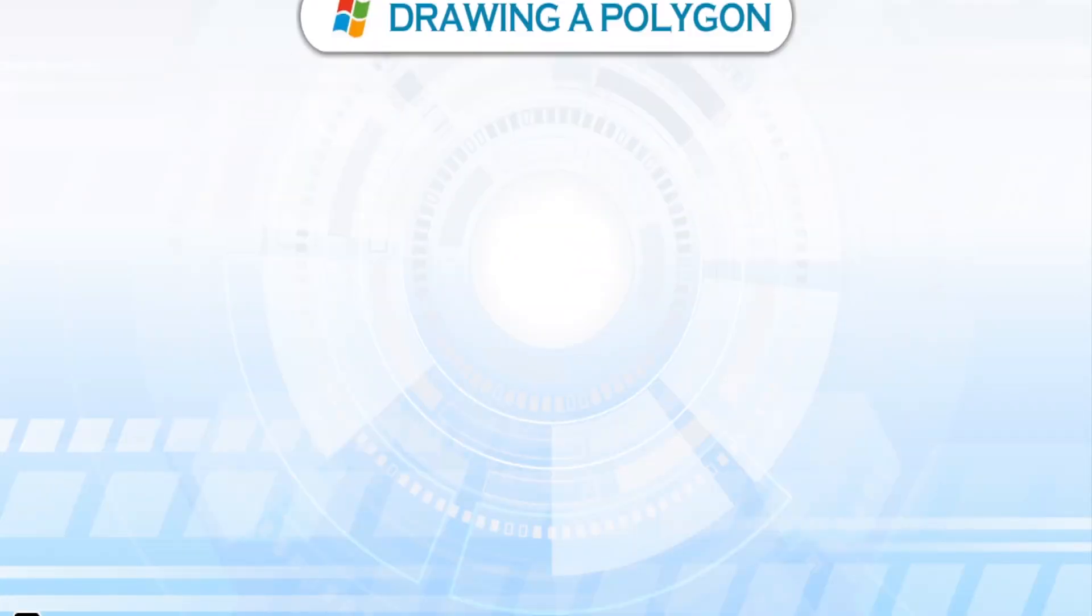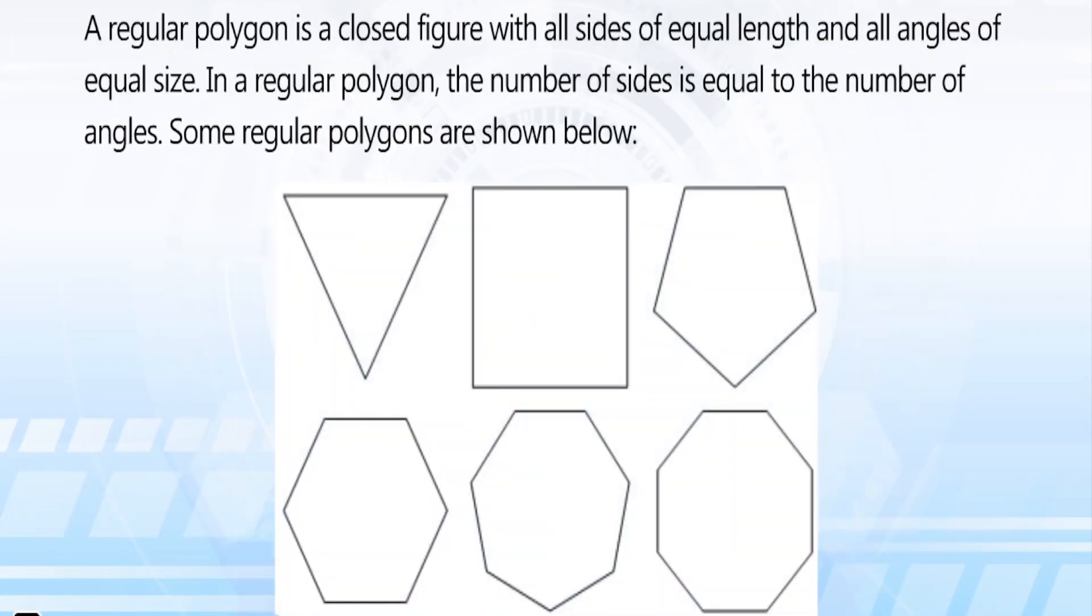A regular polygon is a closed figure with all sides of equal length and all angles of equal size. In a regular polygon, the number of sides is equal to the number of angles. Some regular polygons are shown below.